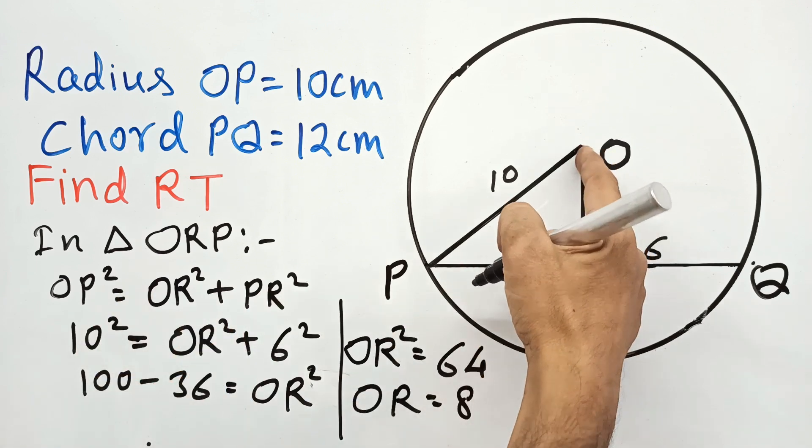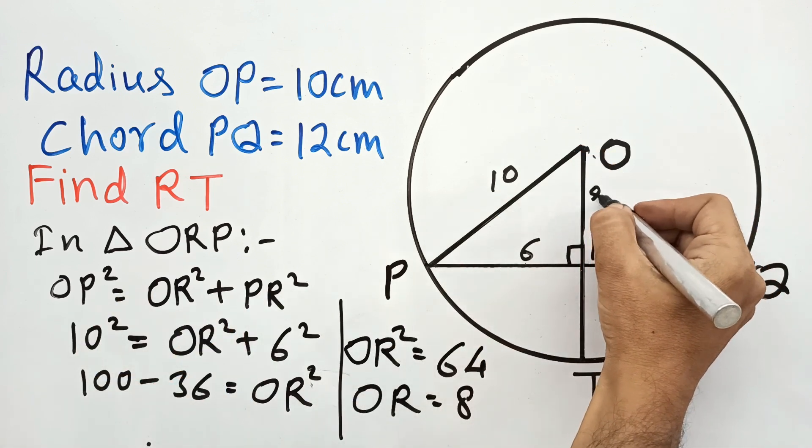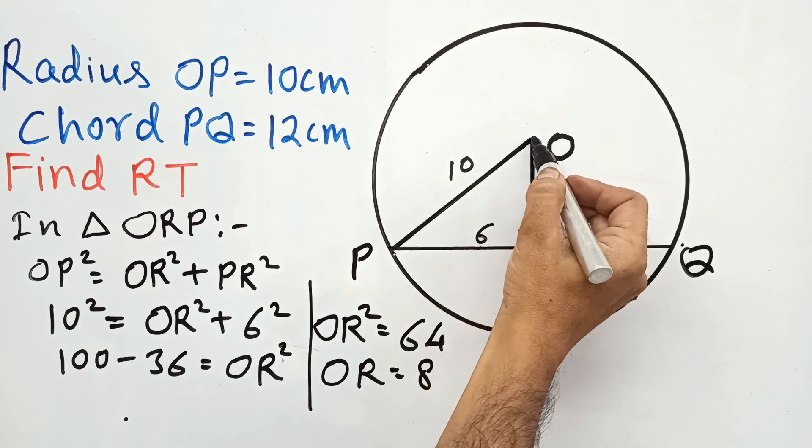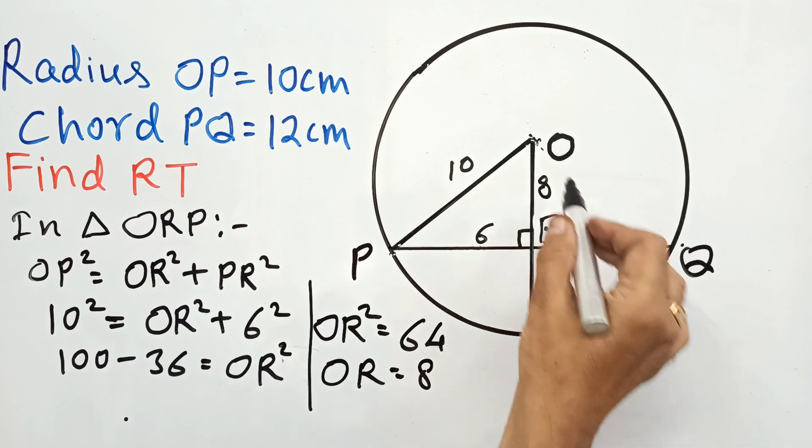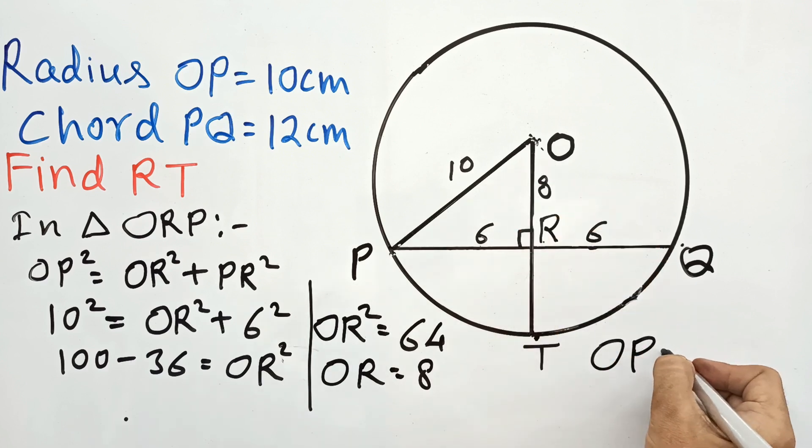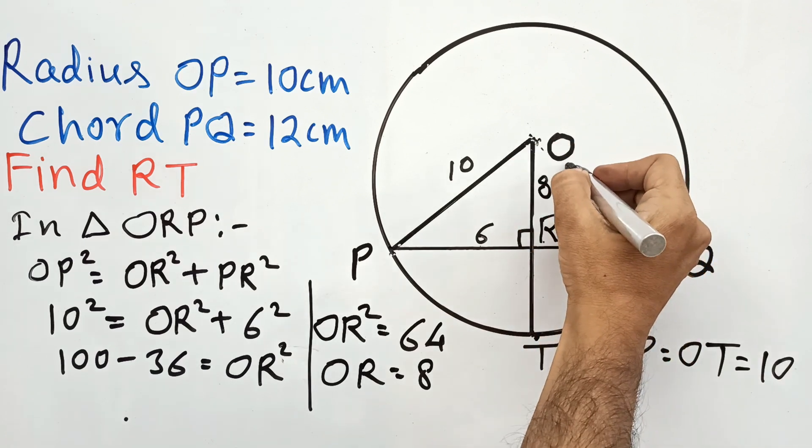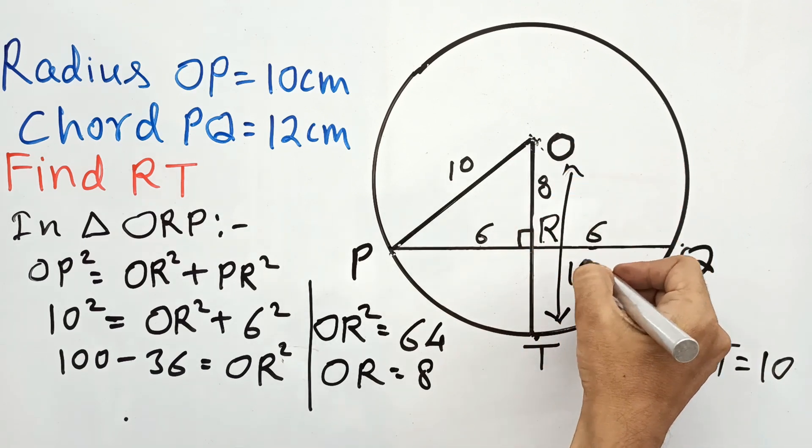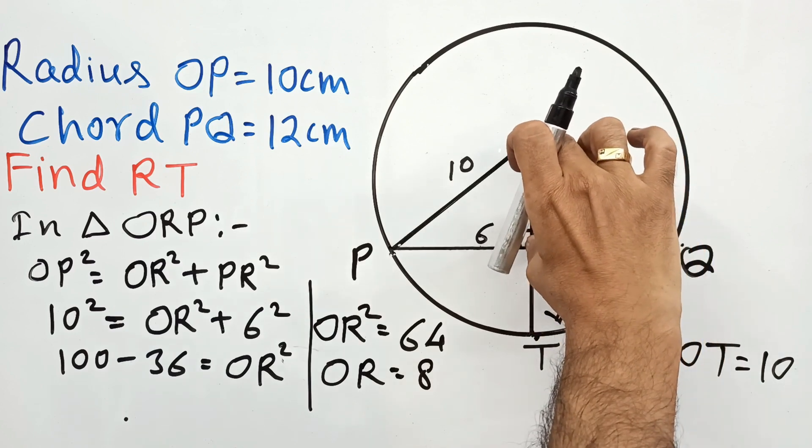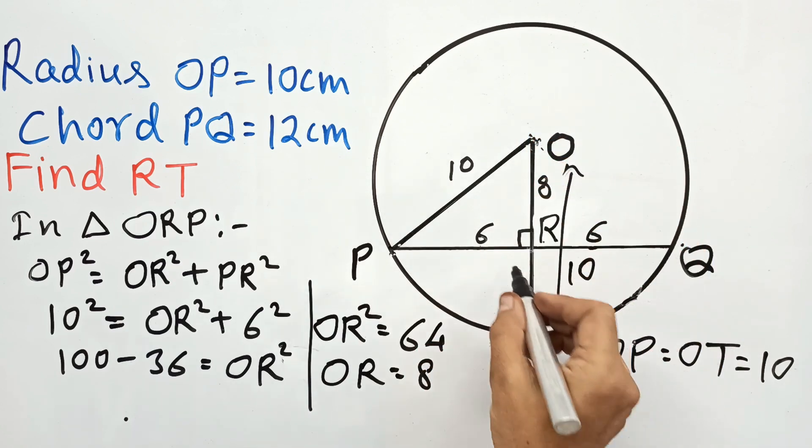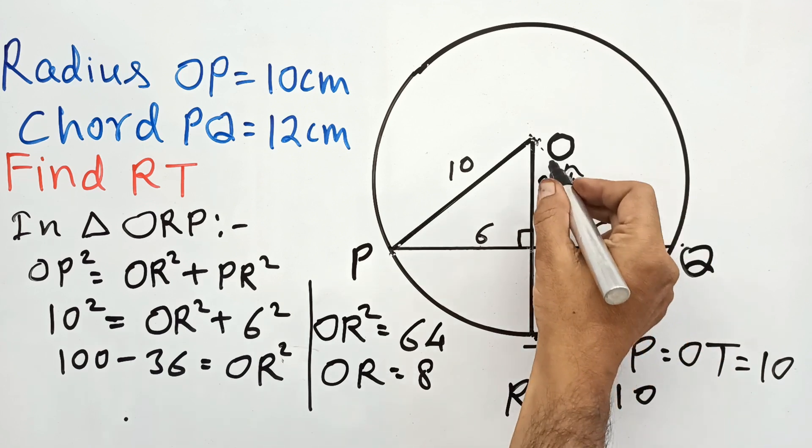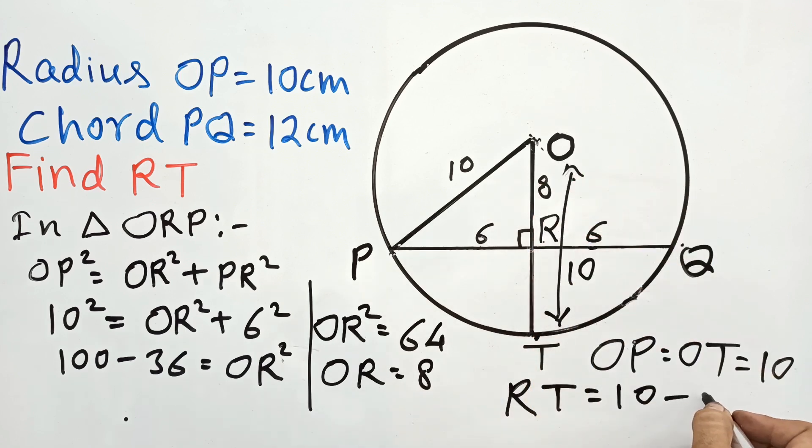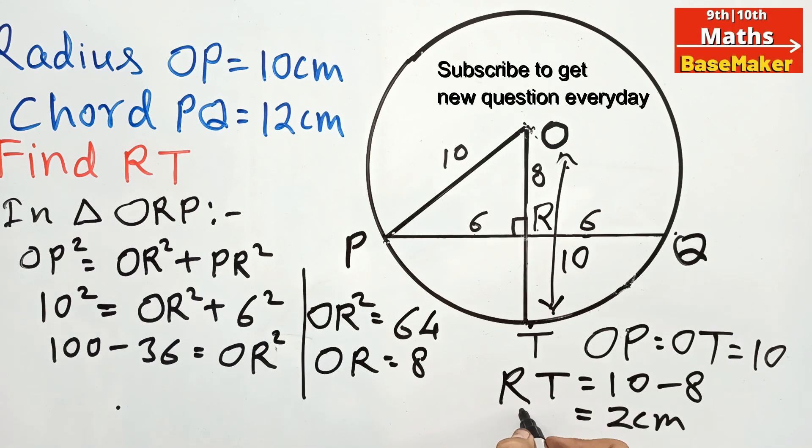We calculate the value of OR as 8 centimeters. Now my dear student, listen here: OP is a radius, so OT will also be a radius because T is on the circle. So OT will also be 10 centimeters. Now out of OT, we calculated OR as 8 centimeters, so therefore RT will be 10 minus 8, which equals 2 centimeters.